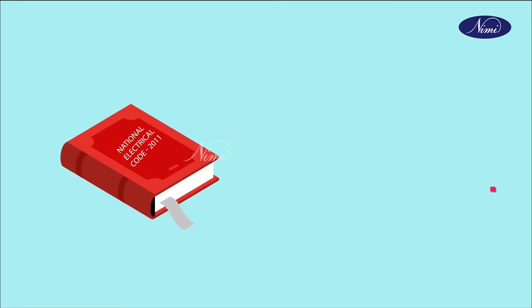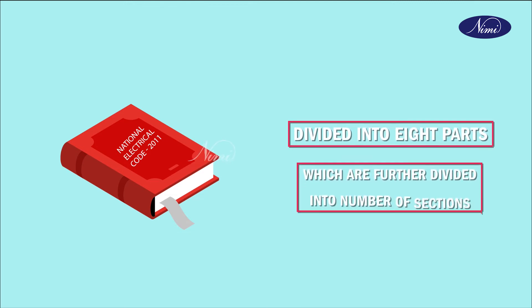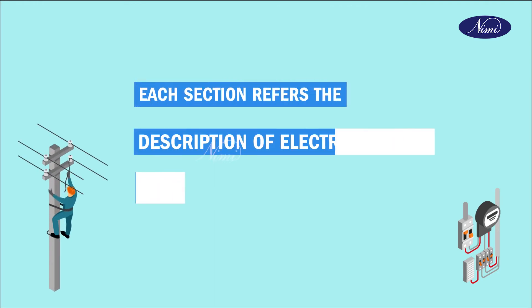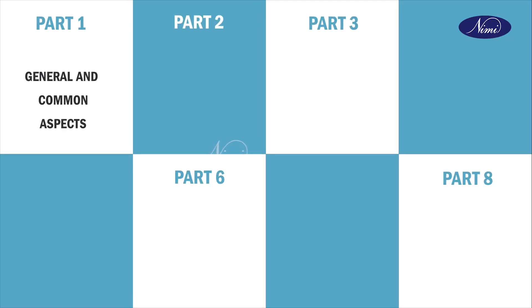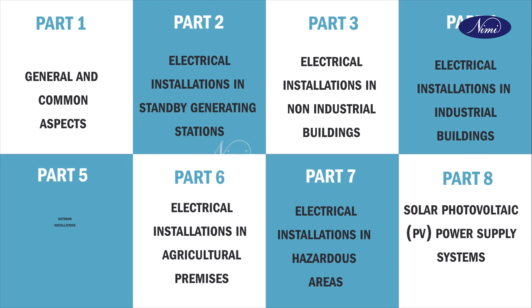National Electrical Code 2011 is divided into 8 parts, which are further divided into a number of sections. Each section refers to the description of electrical items, devices, equipment, etc. Let us see the overview of the parts and the corresponding sections.